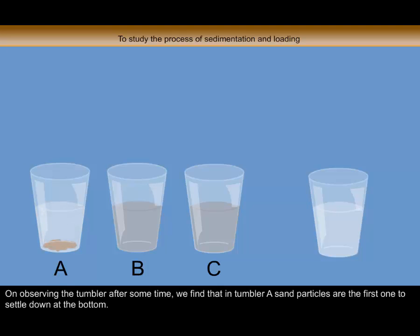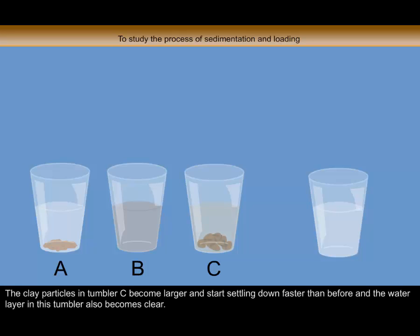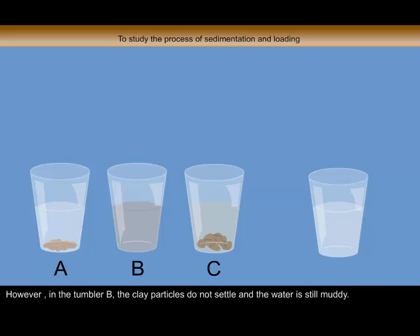We find that in tumbler A, sand particles are the first to settle down at the bottom. The clay particles in tumbler C become larger and start settling down faster than before, and the water layer in this tumbler also becomes clear. However, in tumbler B, the clay particles do not settle and the water is still muddy.